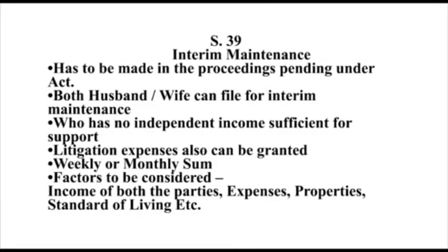To summarize Section 39 interim maintenance: the application has to be made in proceedings under the Act. Both husband or wife can file for interim maintenance if they have no independent income sufficient for support. Litigation expenses can also be granted. The sum is weekly or monthly. Factors considered include income of both parties, expenses, properties, standard of living, and others.